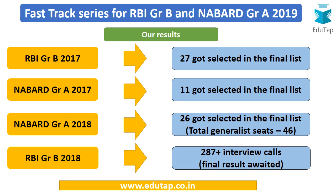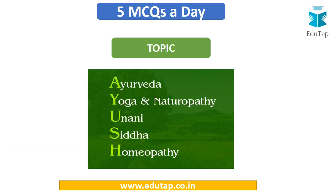Let me quickly tell you about the results we have achieved in the past few years. In RBI Grade B 2017 we got 27 selections in the final list; in NABARD Grade A 2017 there were 11 selections; in NABARD Grade A 2018, 27 of our students made it to the final list out of only 46 total generalist seats; and in RBI Grade B 2018, 287-plus interview calls were received by our students.